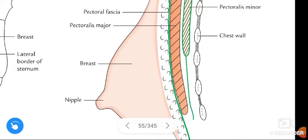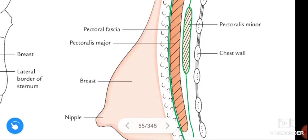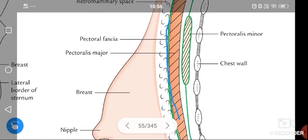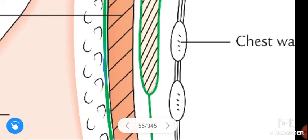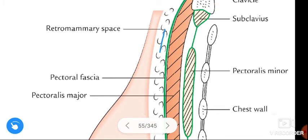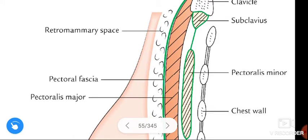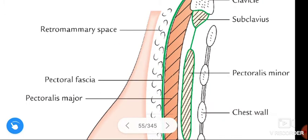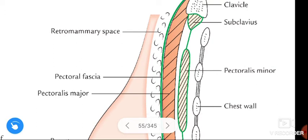See this figure — it gives information about the deep relations of the breast. This is the breast and nipple, and this green line represents the pectoral fascia. The space between the breast and the pectoral fascia is the retromammary space. This space is filled with loose areolar tissue, and the presence of this loose areolar tissue helps in the free movement of the breast up and down and side to side.